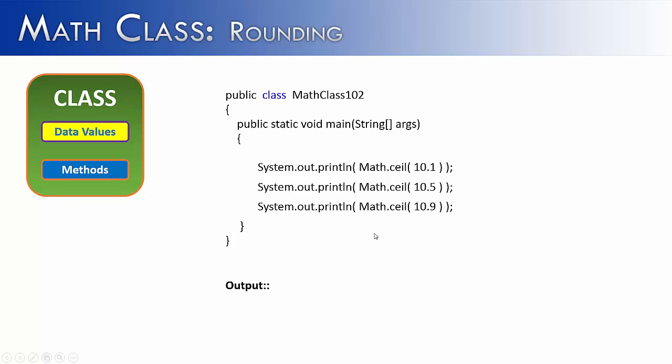The next method that I want to look at is Math.ceil. If we use the same numbers, 10.1, 10.5, and 10.9, we'll see what it does with the numbers. It returns 11 each time. So it's the opposite of floor. Ceil is short for ceiling, meaning that it's going to round up to the nearest whole number.